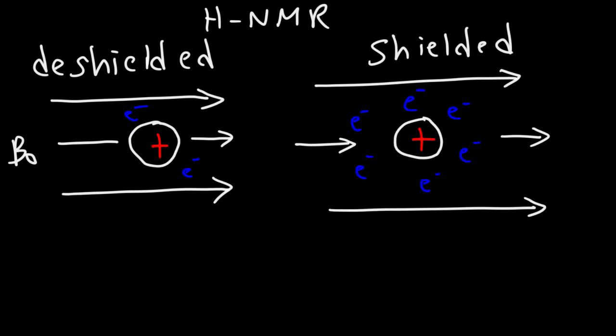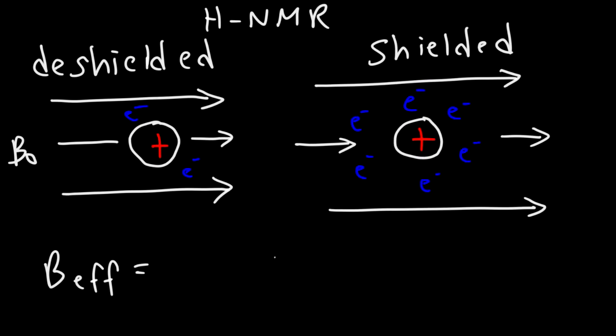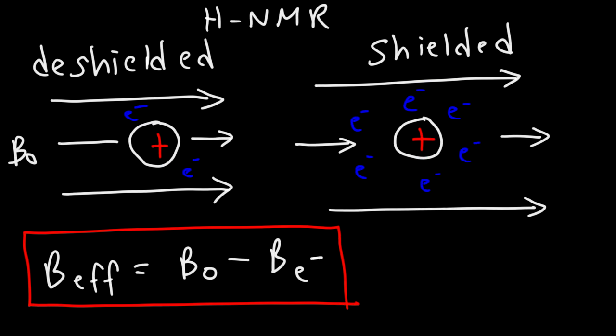Electrons, which have charge, are moving, and so they create their own tiny magnetic fields which oppose the external applied magnetic field. The magnetic field that the nucleus actually feels is less when there are more electrons surrounding it. So the electrons have a shielding effect on the nucleus. The effective magnetic field the nucleus feels is the difference between the applied magnetic field and the magnetic field generated by the electrons, written as B with a subscript E minus.